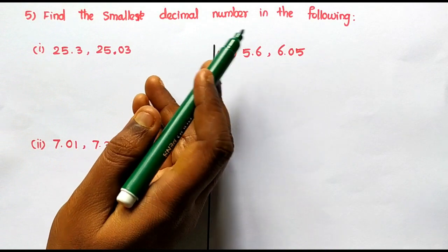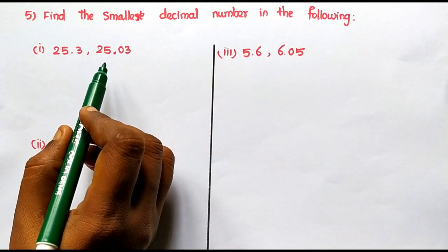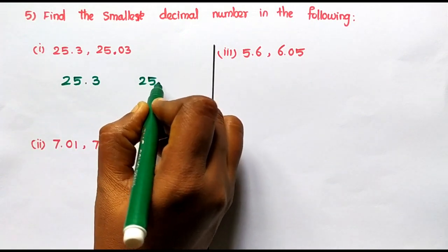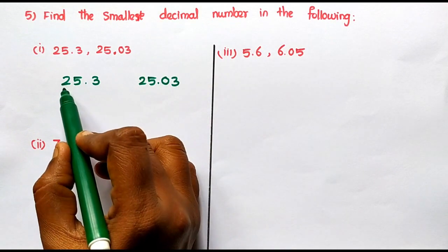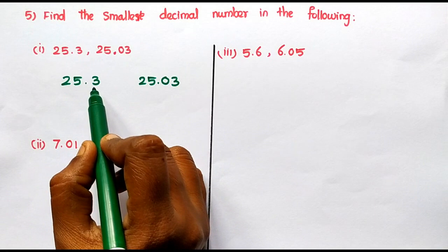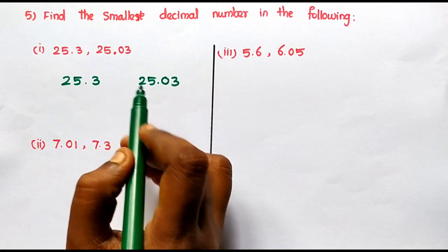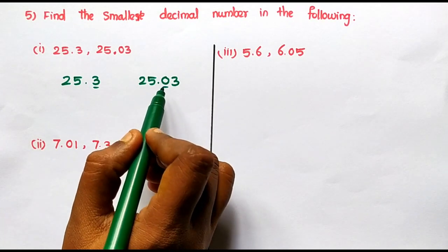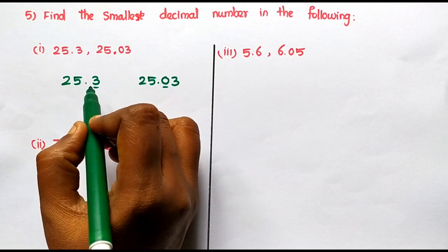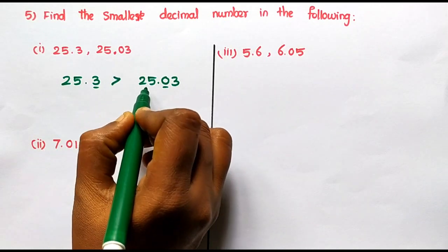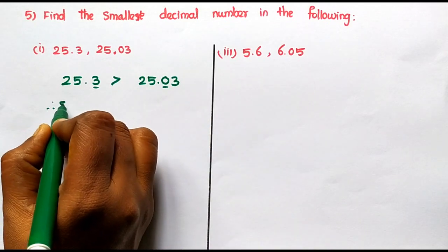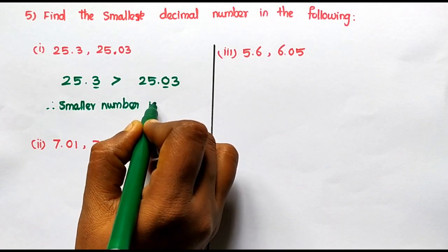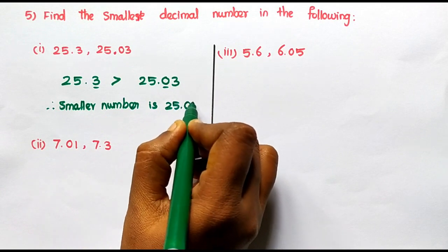Fifth sum: Find the smaller decimal number in the following. First: 25.3 and 25.03. The whole number part is 25 and 25 — equal. So compare the tenths place: here 3, here 0. Which one is smaller? 25.03 is smaller. So 25.3 is greater than 25.03. Therefore, the smaller number is 25.03.